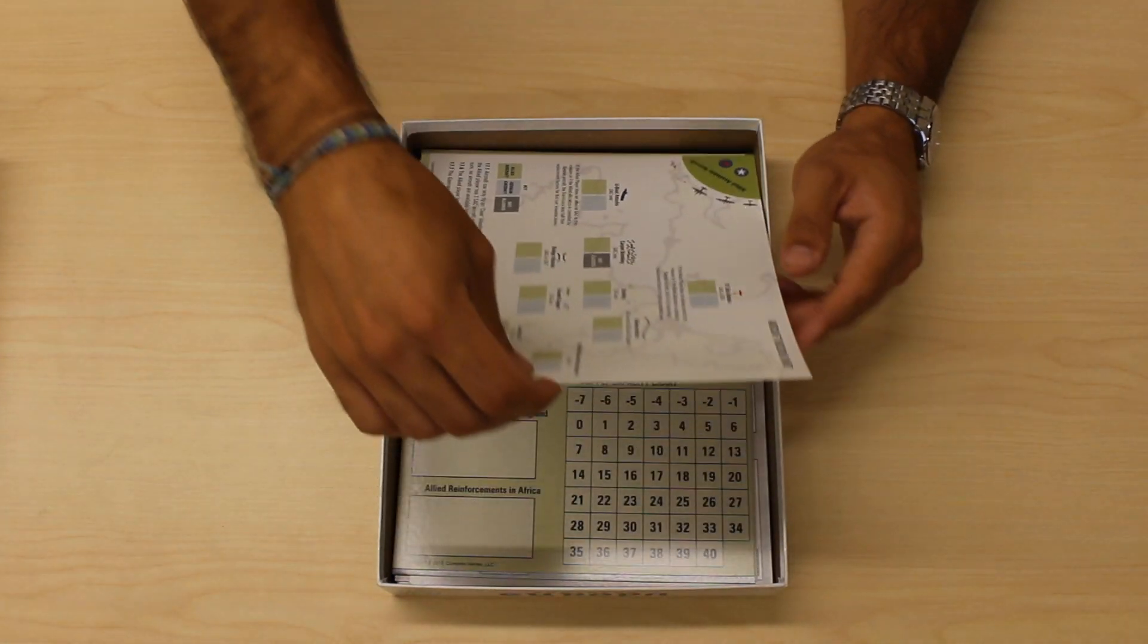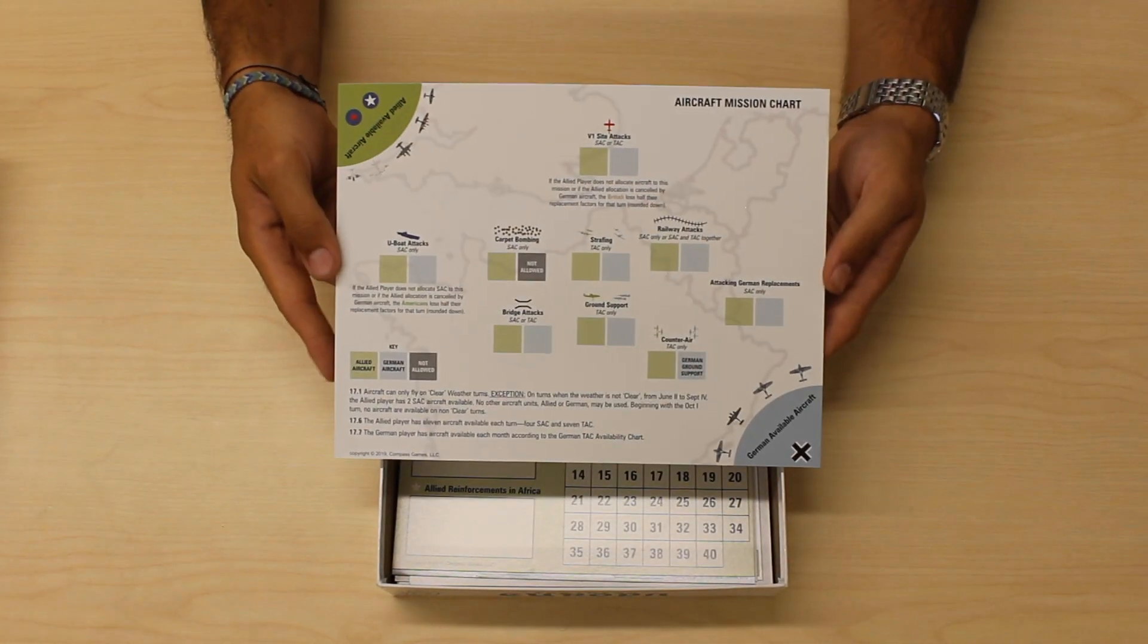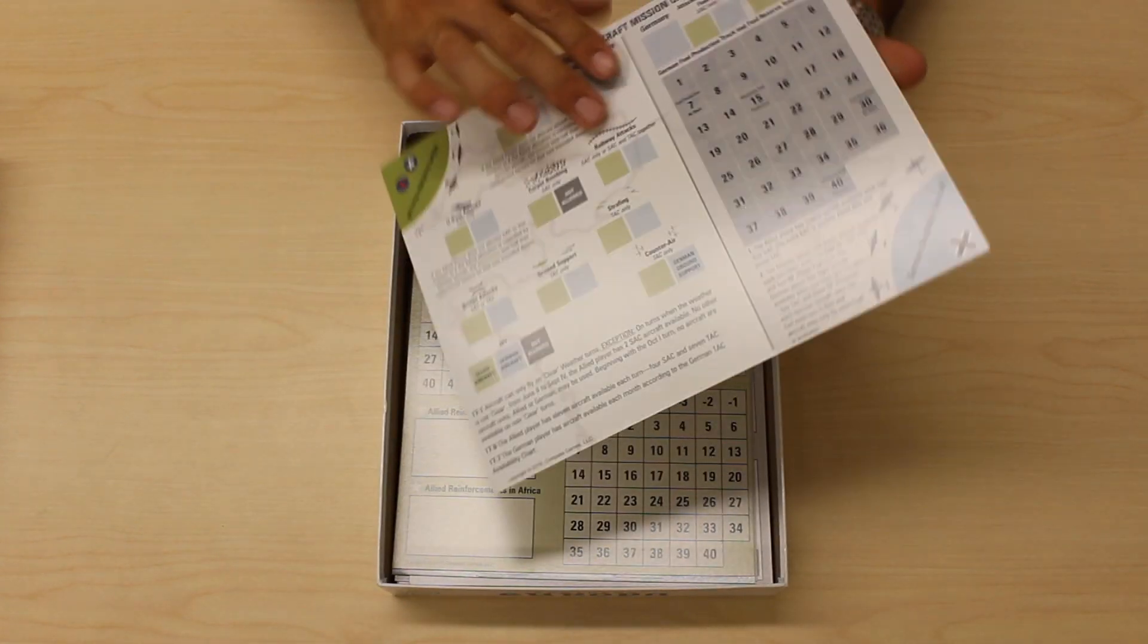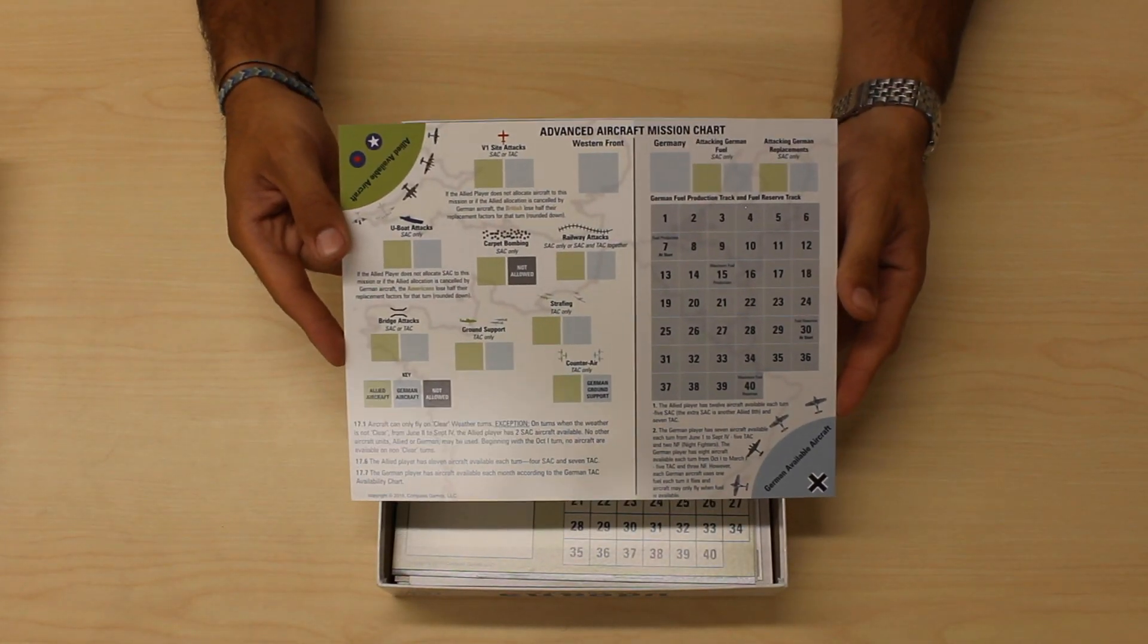One aircraft mission chart. This is two-sided: this side being the aircraft mission chart, and this side being the advanced aircraft mission chart.